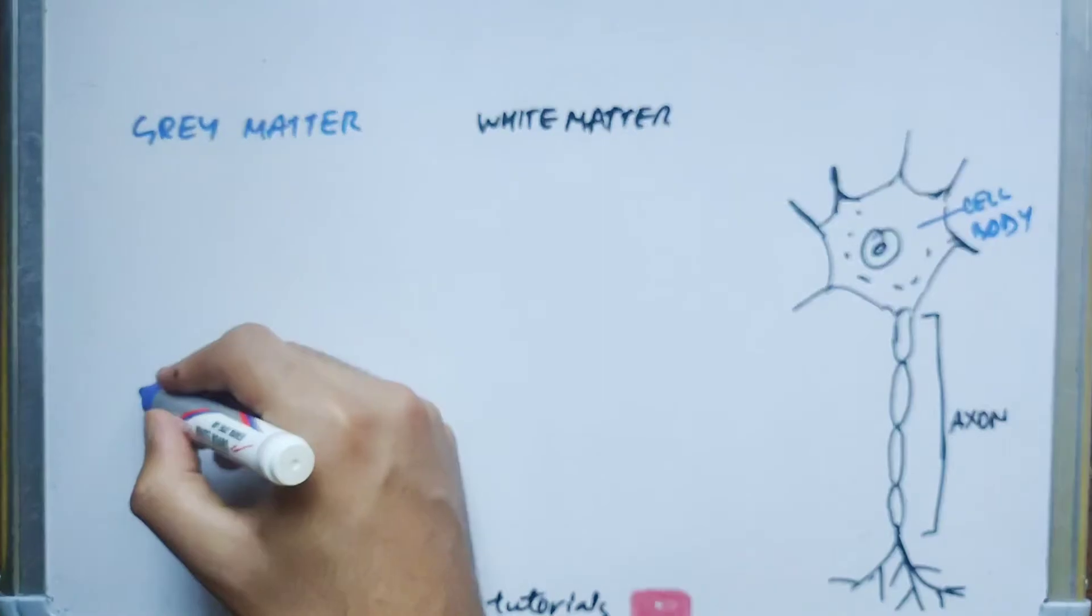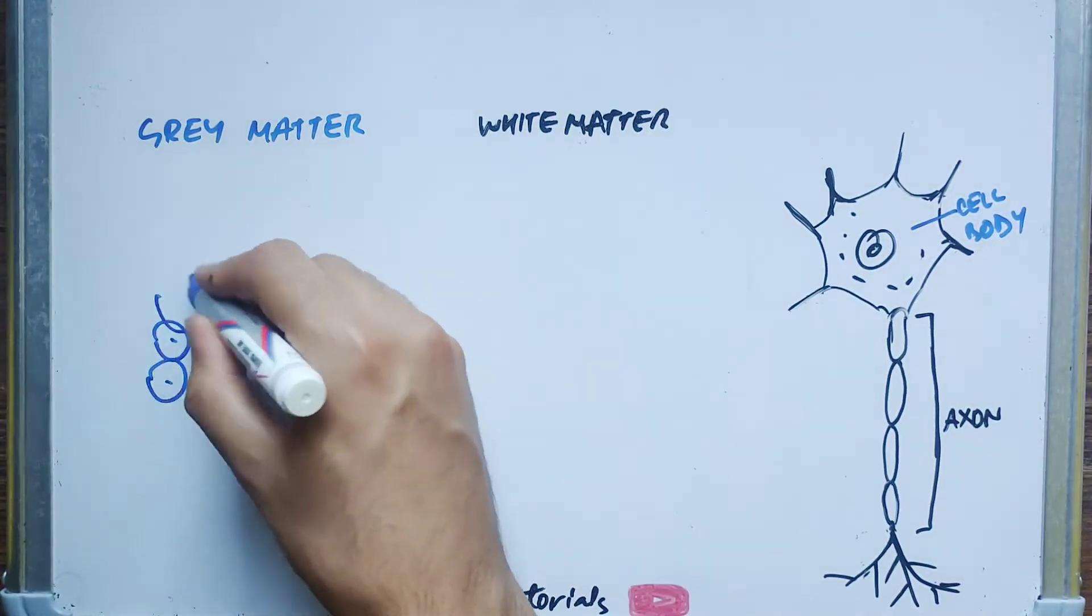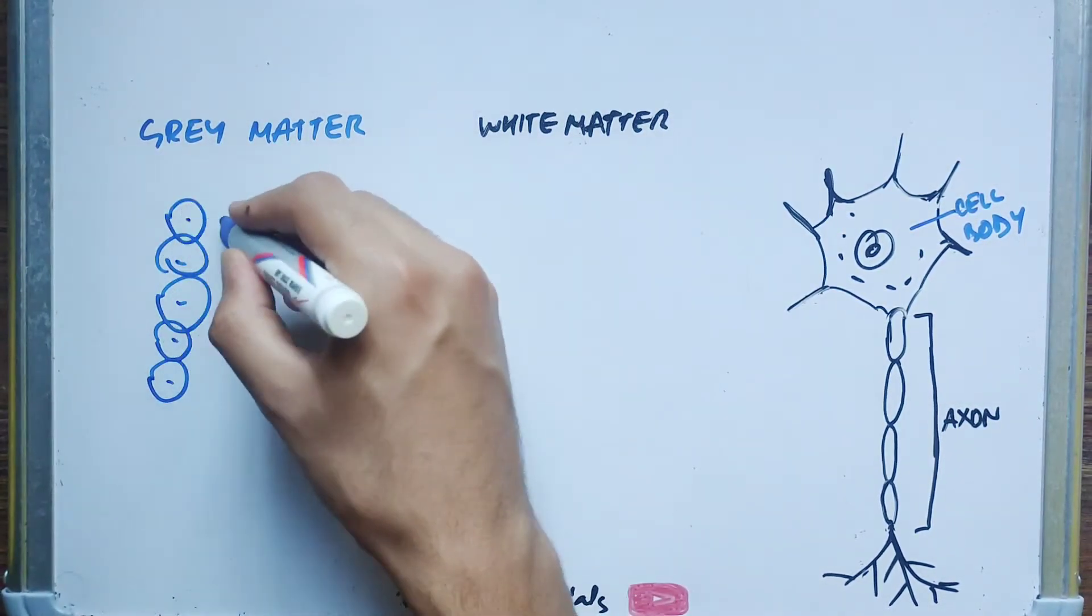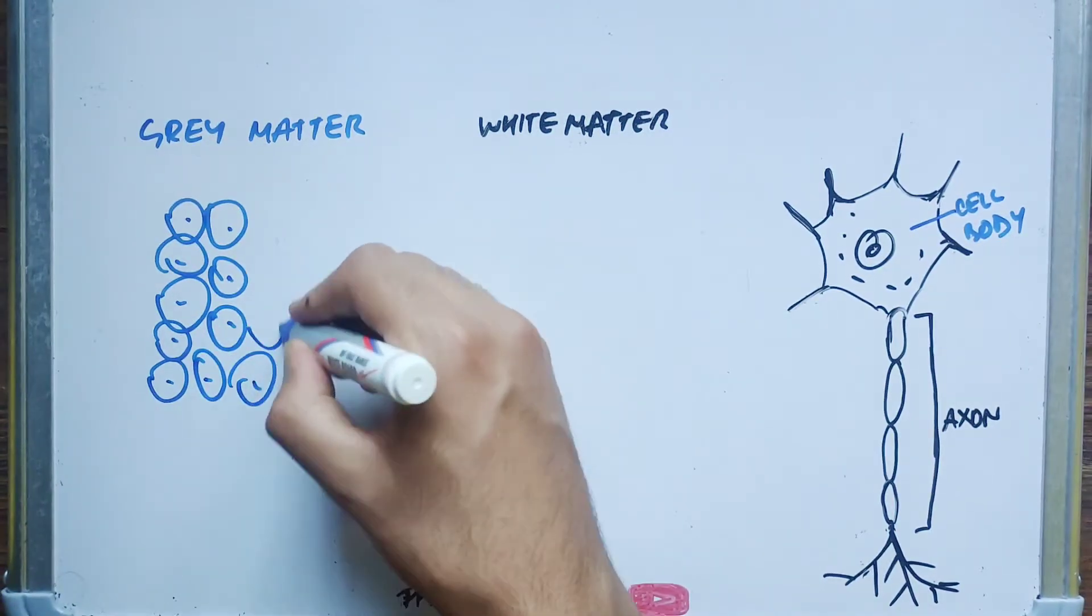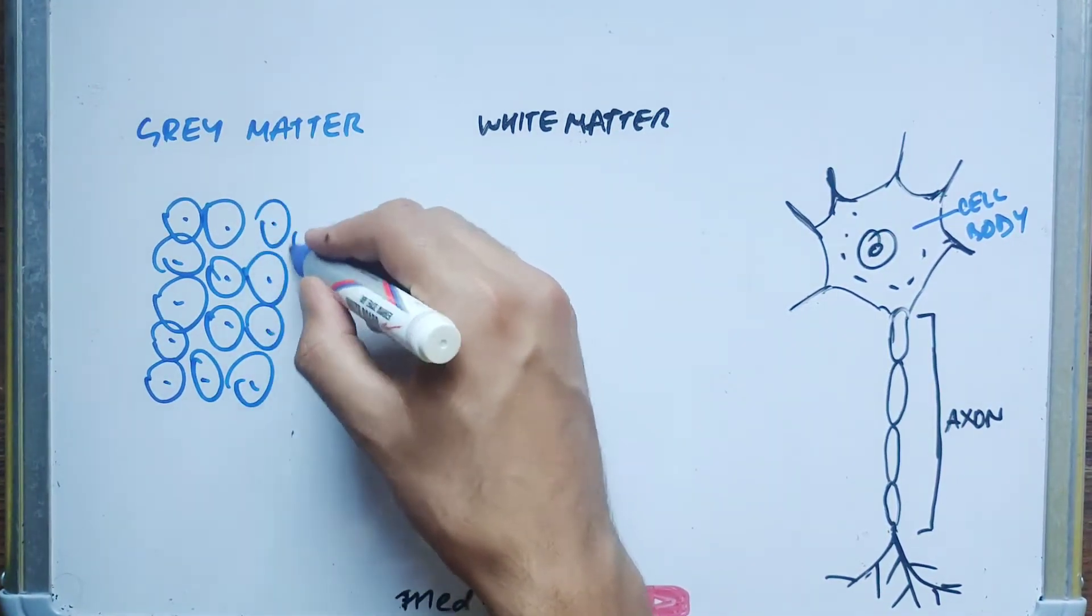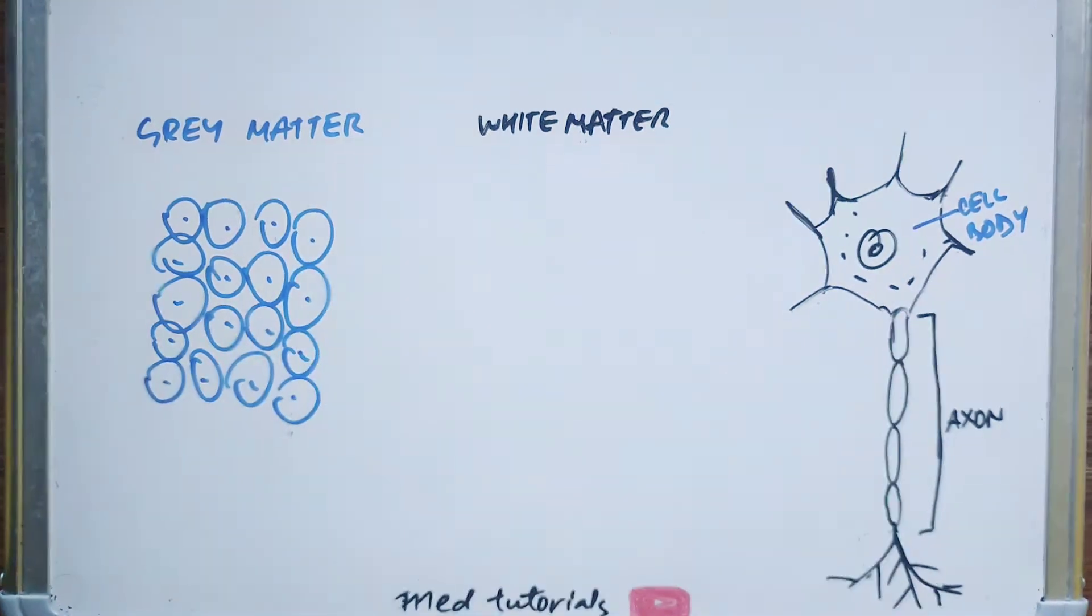Now central nervous system mein kya hota hai? We have a collection of cell bodies, neuronal cell bodies. For example, these are the neuronal cell bodies. So let this be the collection of neuronal cell bodies.